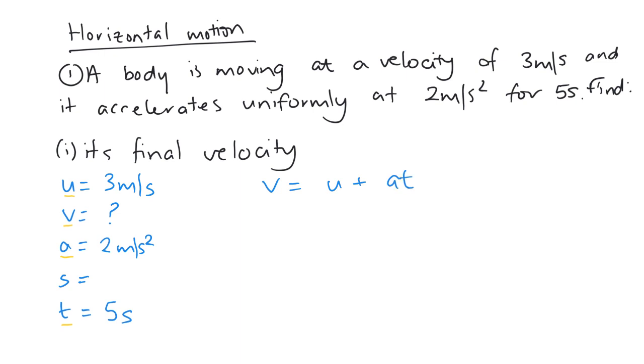Now sometimes there's more than one equation that you use, sometimes there's only one that you can use. But if there's more than one, it doesn't matter which one you pick. So put in our values, U is 3, A is 2, T is 5, so that's 3 plus 10. So we have 13 meters per second.